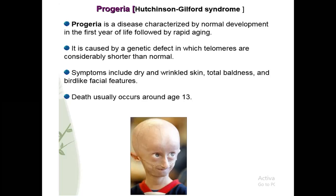Symptoms of progeria include dry and wrinkled skin, total baldness, and bird-like facial features. The skin becomes dry and wrinkled, the person becomes completely bald, and the face becomes like a bird - like a parrot. In this case, death generally occurs by the age of 13, because the person ages so rapidly.